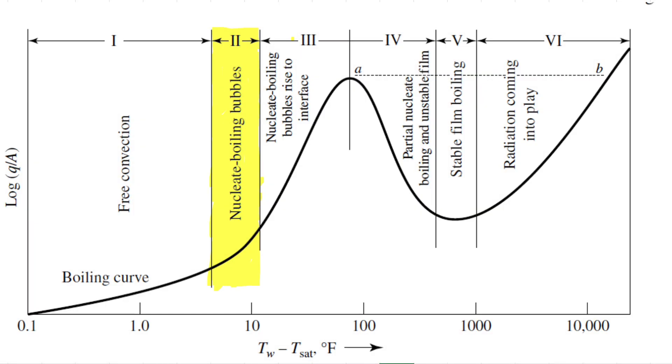Regimen 2 will show the first visible signs of boiling by the small bubbles forming on the heated object in the fluid, breaking off, rising, and then condensing before reaching the surface of the fluid.